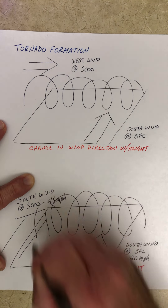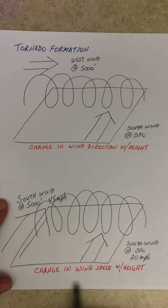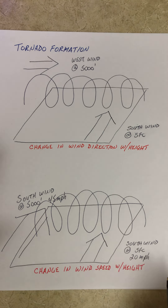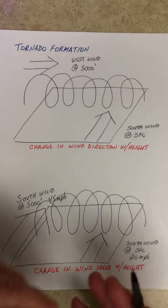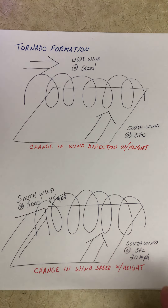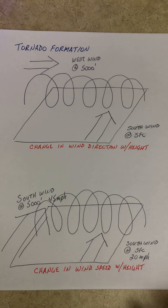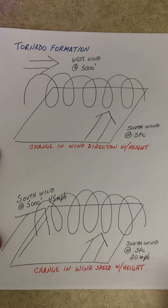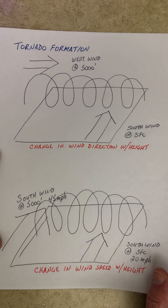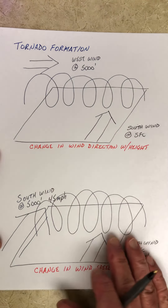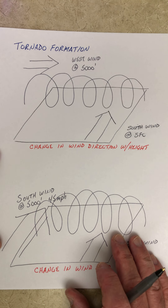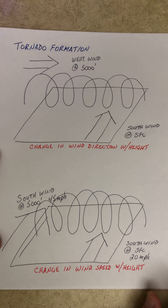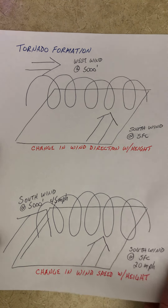Either of these situations — a change in wind direction with height or a change in wind speed with height — can lead to this horizontally spinning tube of air. And in diameter, this is a very big horizontally spinning tube of air; we're talking maybe 5,000, even 10,000 feet in diameter. But again, it doesn't mean that a tornado is going to form — it's just one of the necessary ingredients.